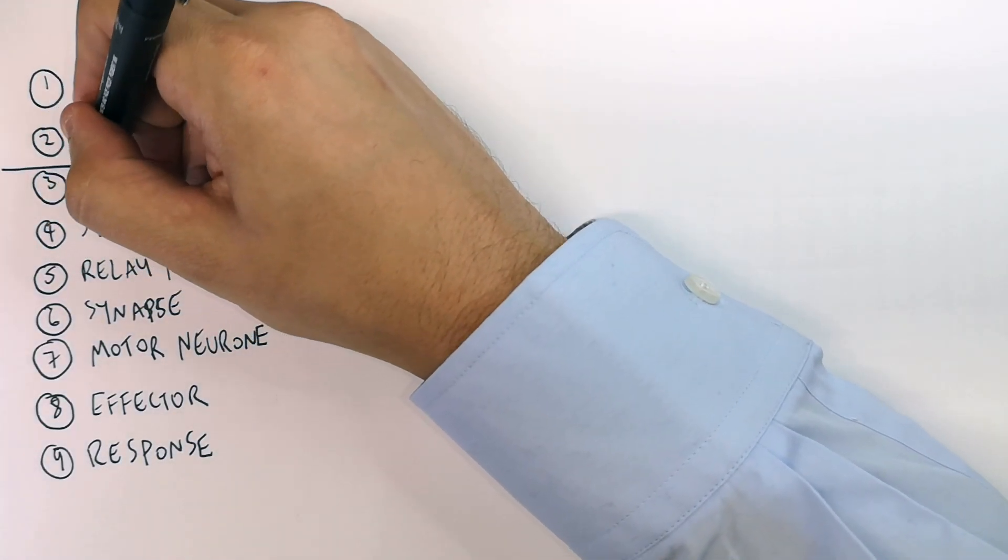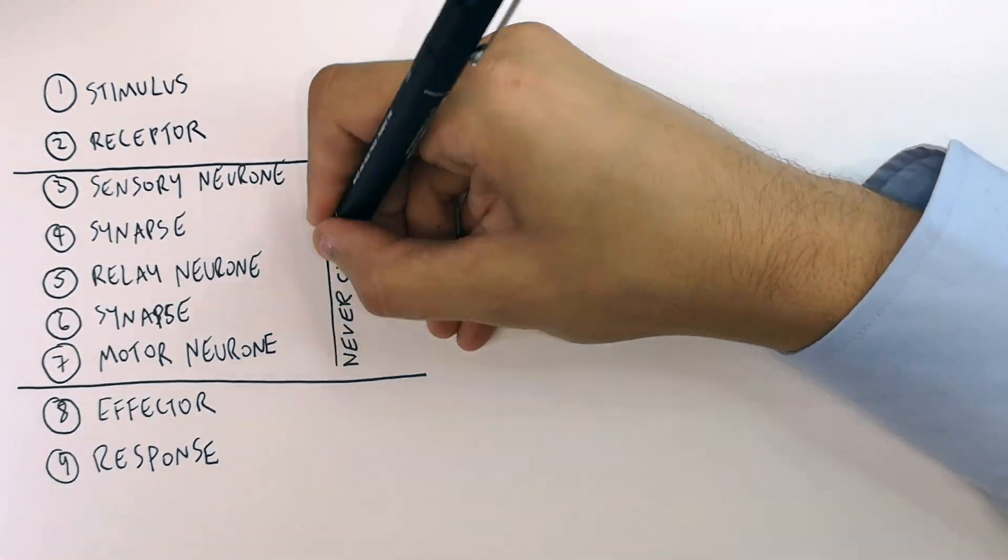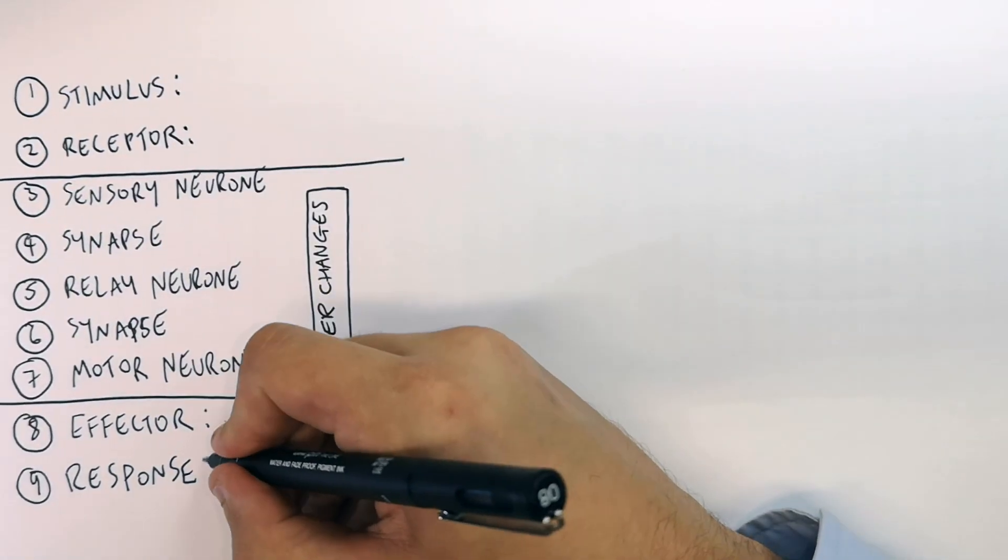The part of the central nervous system never changes the order. You need to learn this in this order. These never change. And what does change is the stimulus, receptor, effector, and response.